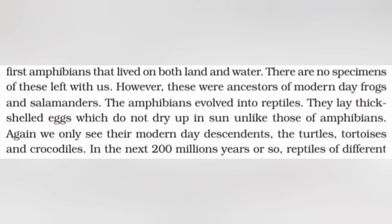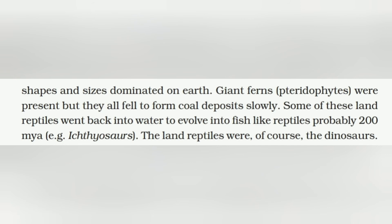The amphibians evolved into reptiles. Reptiles had thick-shelled eggs which do not dry up in the sun, unlike those of amphibians. We only see their modern-day descendants — the turtles, tortoises, and crocodiles. In the next 200 million years or so, reptiles of different shapes and sizes dominated on Earth. Giant ferns — pteridophytes — were present but fell to form coal deposits. Some land reptiles went back to the water to evolve into fish-like reptiles, probably 200 million years ago — for example, Ichthyosaurus.